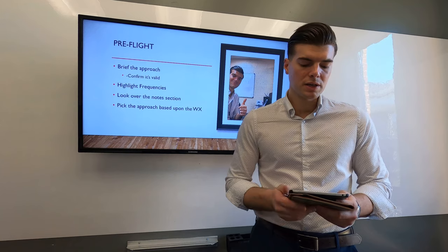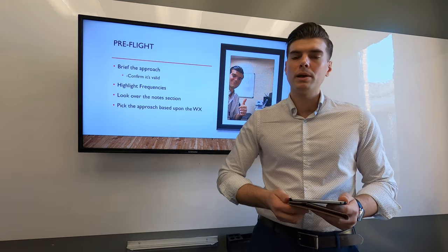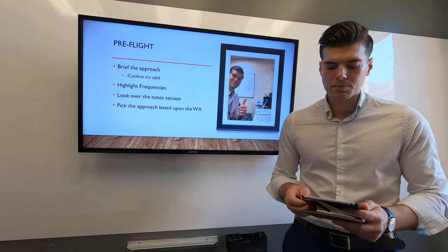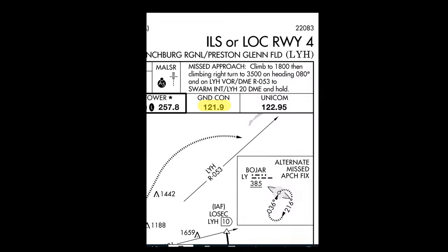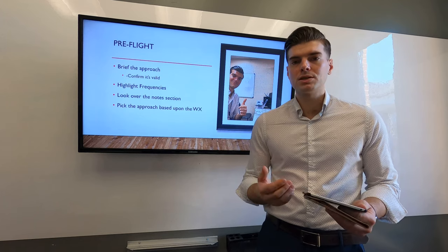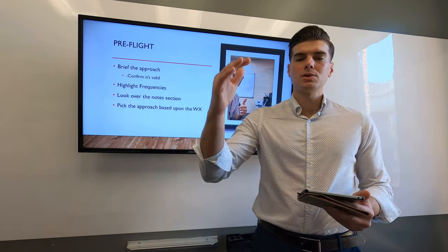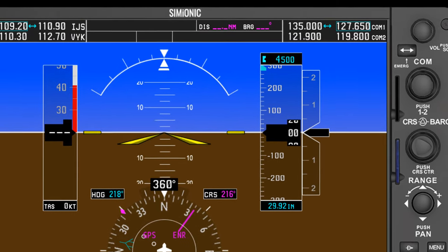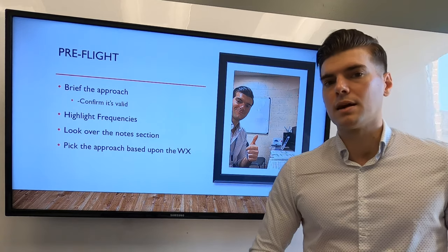The ATIS frequency for Lynchburg airport is 119.8. Roanoke Approach, which we'll be on before being handed off to tower, is 135.0. Lynchburg Tower is 127.65, and Ground once we're on the ground is 121.9. I like to have these frequencies highlighted so that before we get vectored into the approach, we can get them set up in COM1 and COM2 to stay ahead of the airplane. Then we want to pick the best approach based on the weather at the airport.